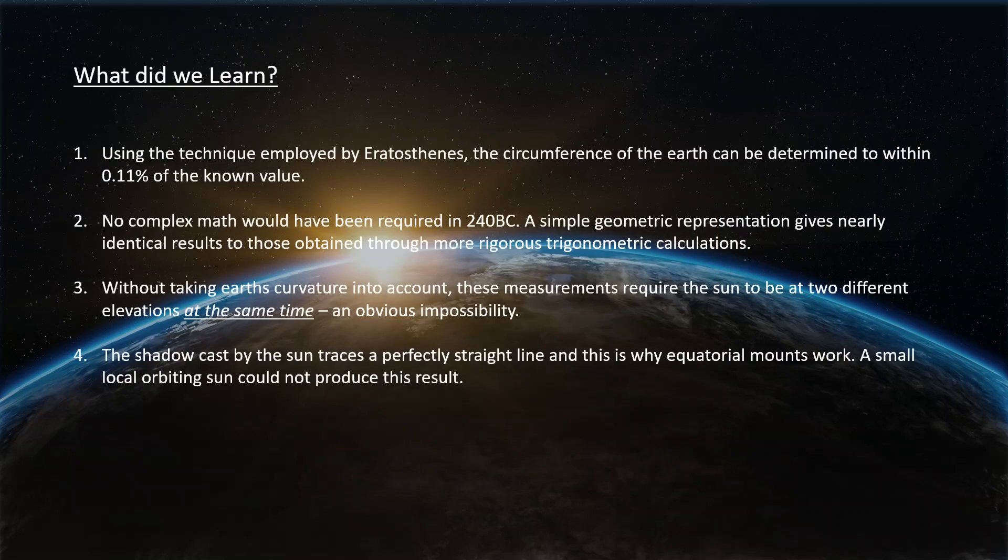So what did we learn? We found out that the technique used by Eratosthenes was remarkably accurate. We were able to get within about a tenth of a percent of the known value. We didn't have to have any complex math to do this, just simple geometry. And you get just about exactly the same answer you get with rigorous trigonometric calculations. We also found out that without taking the earth's curvature into account, the measurements require the sun to be at two different elevations at the same time. That's obviously impossible. And of course, that shadow traces a perfectly straight line, and it's exactly why an equatorial mount works with a camera or a telescope that could not and will not work if the sun is in a low orbiting position over the surface of the earth. It just is not possible.